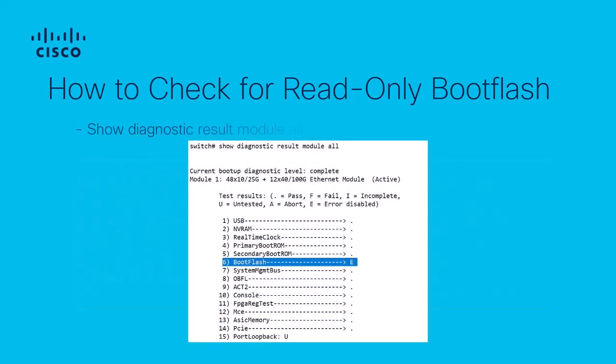Now we can look at other commands on the switch which pertain to the internal diagnostics of the device. In addition to all of the other logs previously mentioned, these diagnostics will provide specific information about the boot flash and its current state. They will also indicate the specific type of boot flash that you have on your switch. Starting with the command show diagnostic result module all, we see that the boot flash section is marked with an 'E' as opposed to a period. This indicates that the boot flash is currently error-disabled and did not pass the module diagnostics. This is why in the earlier command show module, we saw the online diagnostics section show as fail.